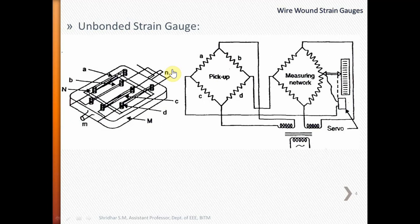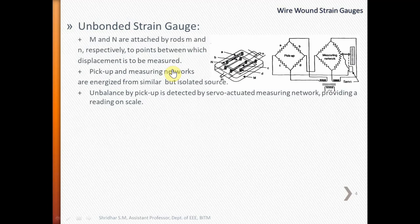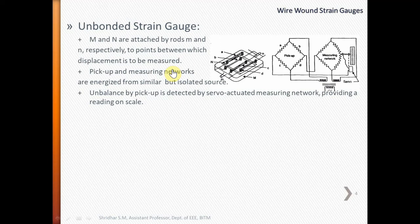M and N are attached to rods M and N respectively, to points between which displacement is to be measured. The pickup and measuring networks are energized from similar but isolated sources. Unbalance originated in the pickup is detected and balanced by a servo-actuated measuring network, providing a reading of strain on a graduated scale.